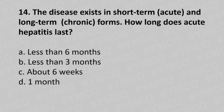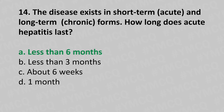Now let's move to question number 14. The disease exists in short-term acute and long-term chronic form. How long does the acute hepatitis last? Option A, less than six months. Option B, less than three months. Option C, about six weeks. Option D, one month. And the answer is... Option A, less than six months.